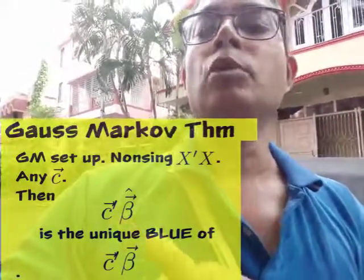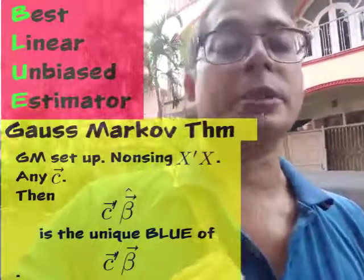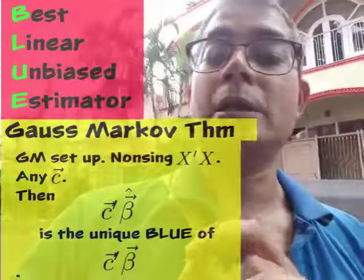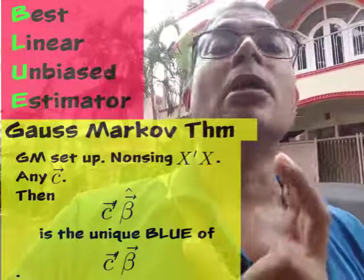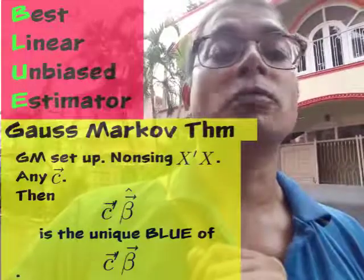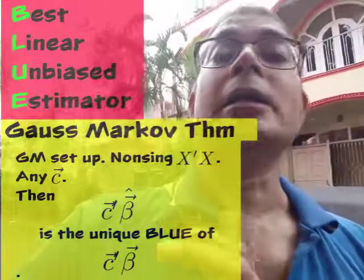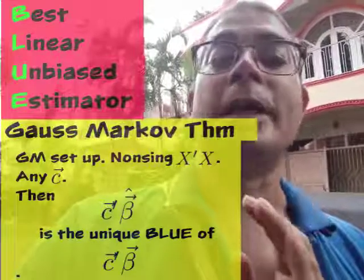Now, what is that blue? Blue means best linear unbiased estimator. That is, among all estimators that are linear in Y, that is a linear combination of the various observations Y, a matrix times Y, and that are unbiased.